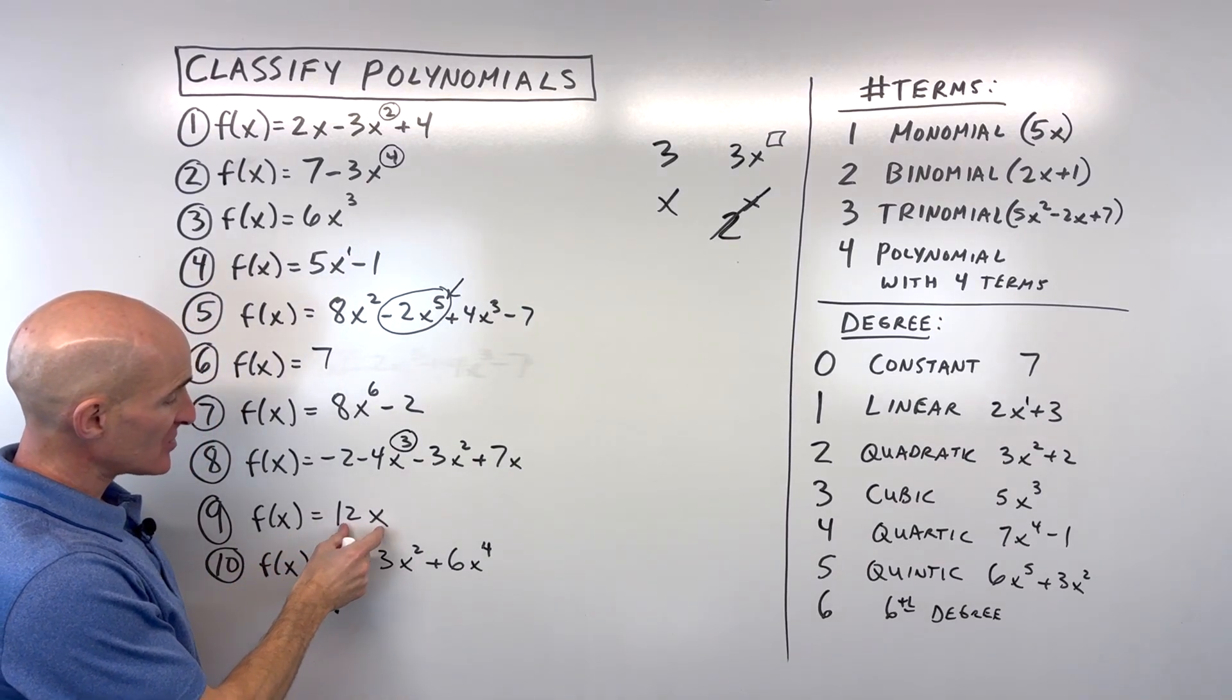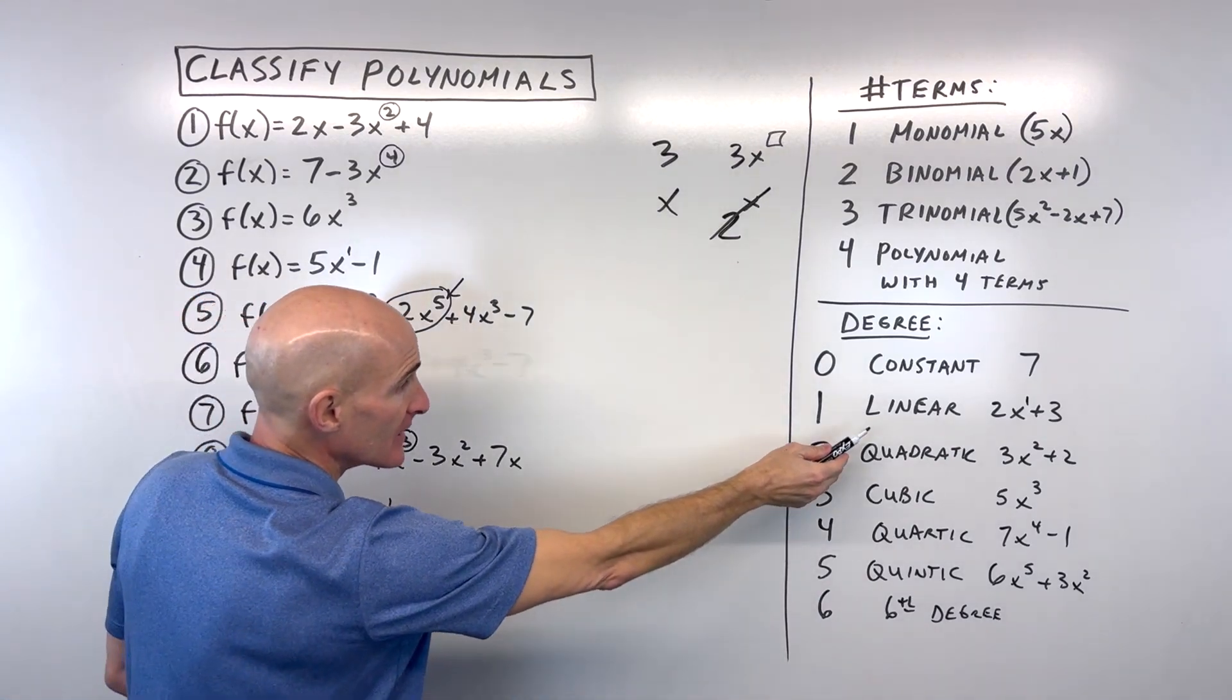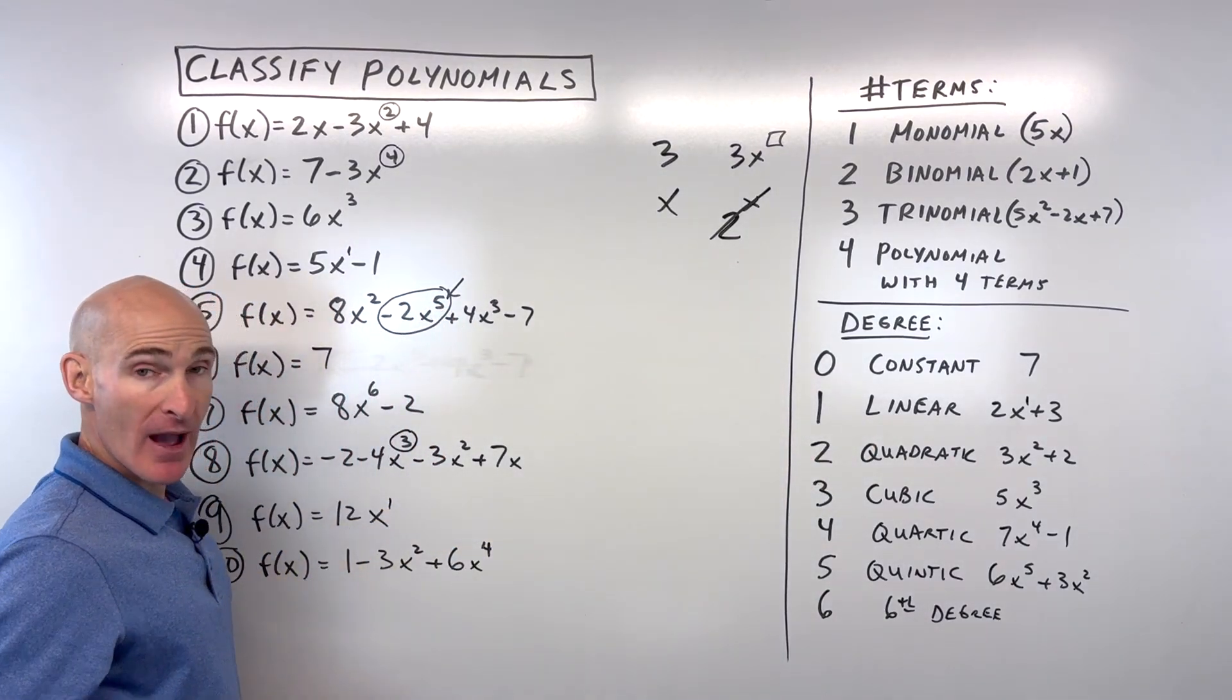Number nine, we have 12x. This is just one term, this is a monomial. It's to the first degree, which means that it's linear. So I would say a linear monomial.